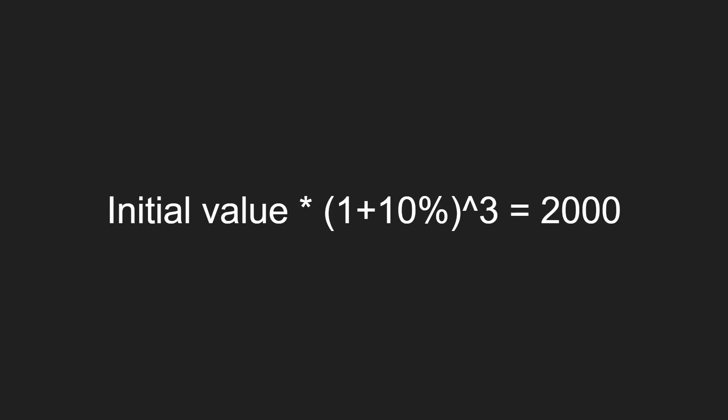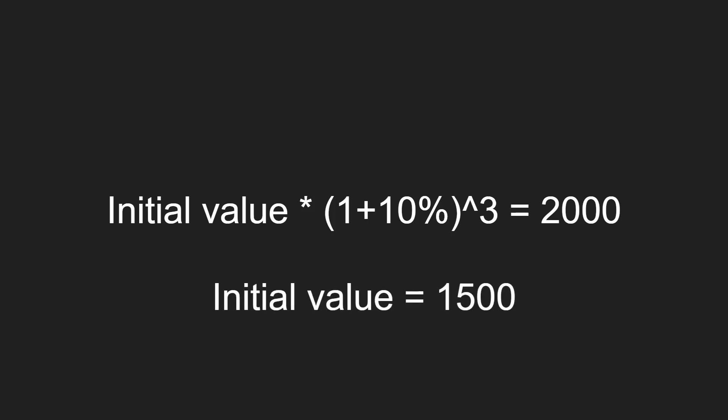We can use this formula to calculate the initial value of the investment today. So the initial value times one plus 10% to the power of three, which is the three years time, equals 2,000. By calculating this, we get an initial value of around $1,500. So $1,500 is around the amount that you want to pay for this investment today, which you will get $2,000 in three years time.